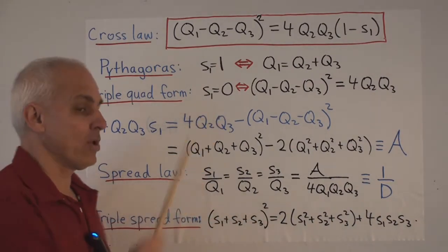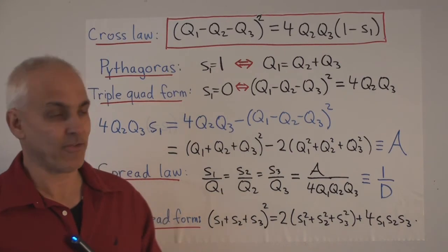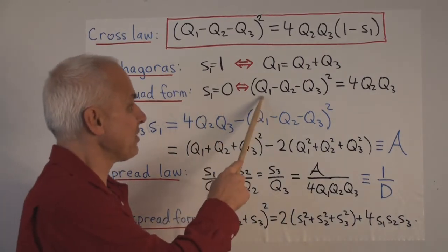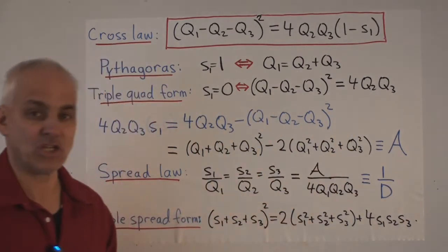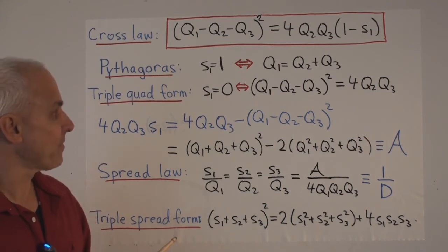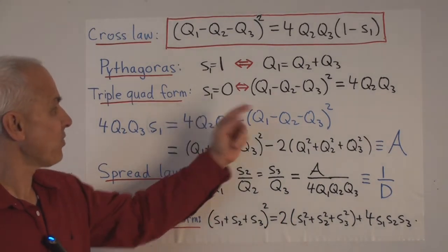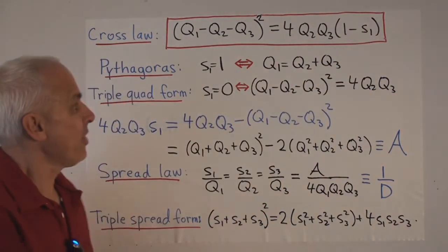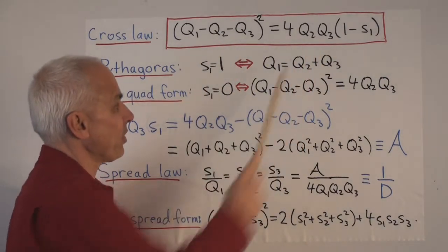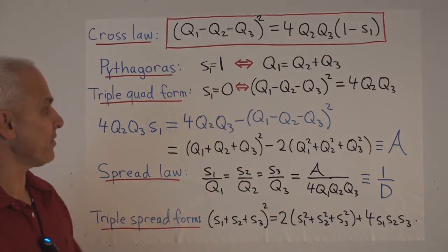So this condition is collinearity between these three points. And this collinearity is represented by this relationship between the three quadrances. And it's obvious if S1 is 0, then this term is 0. Then we just get this equals 4Q2Q3. And conversely.